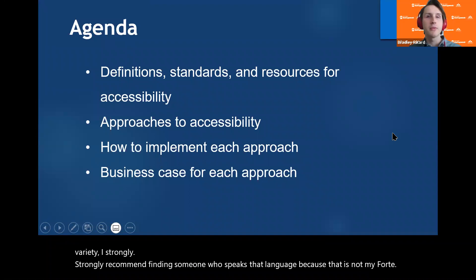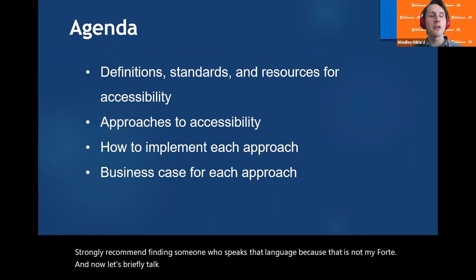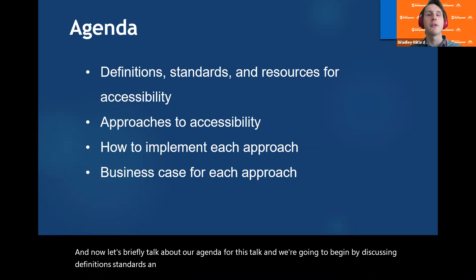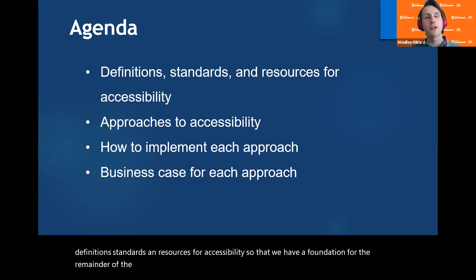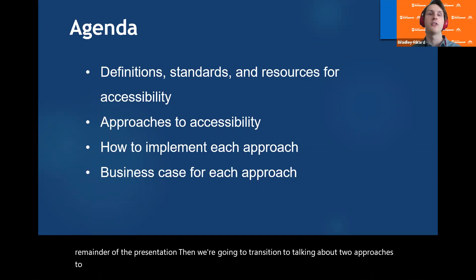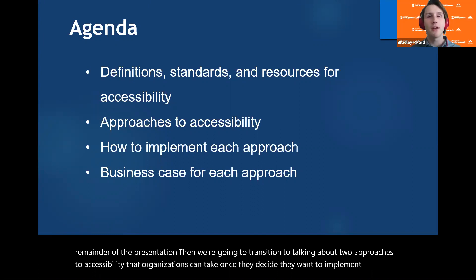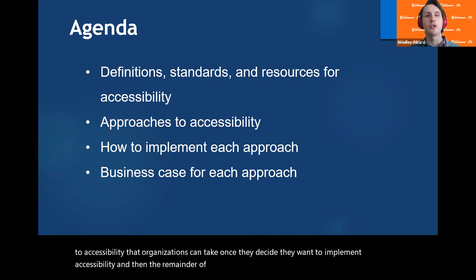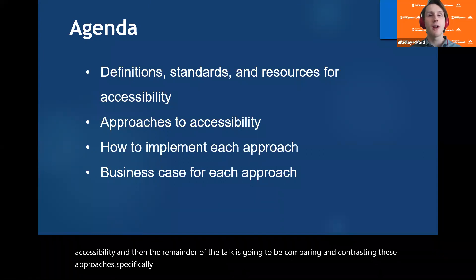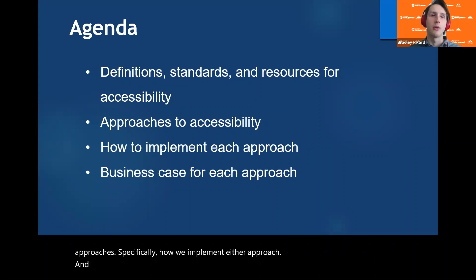Now let's briefly talk about our agenda for this talk. We're going to begin by discussing definitions, standards, and resources for accessibility so that we have a foundation for the remainder of the presentation. Then we'll transition to talking about two approaches to accessibility that organizations can take. The remainder of the talk will be comparing and contrasting these approaches — specifically how we implement either approach and the business case for either approach.